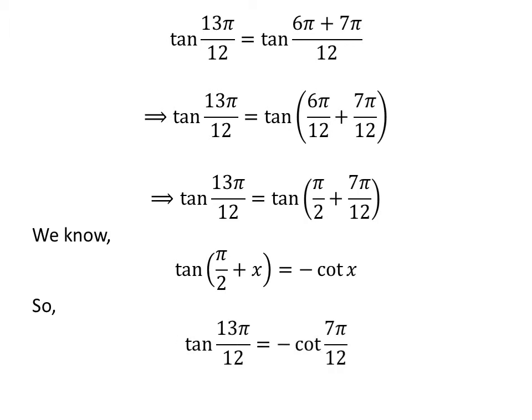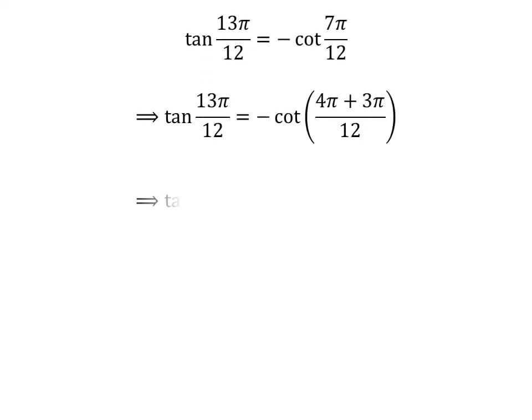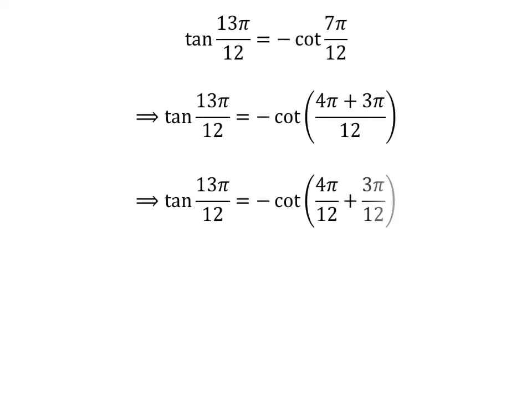So, tangent of 13 times pi upon 12 is equal to minus cotangent of 7 times pi upon 12. Following the above steps, we get tangent of 13 times pi upon 12 is equal to minus cotangent of pi upon 3 plus pi upon 4.